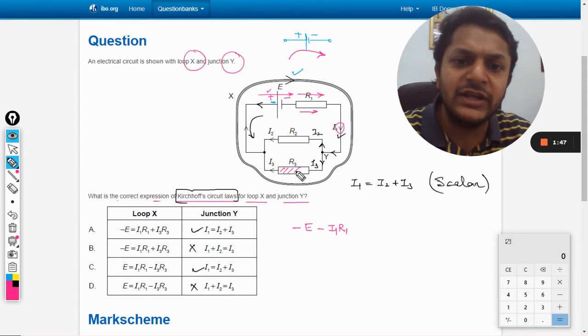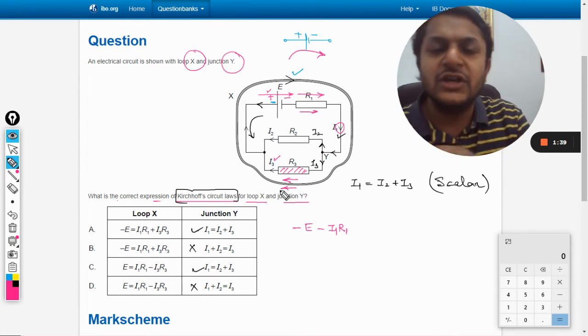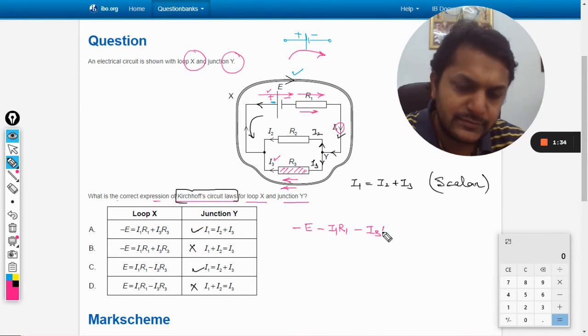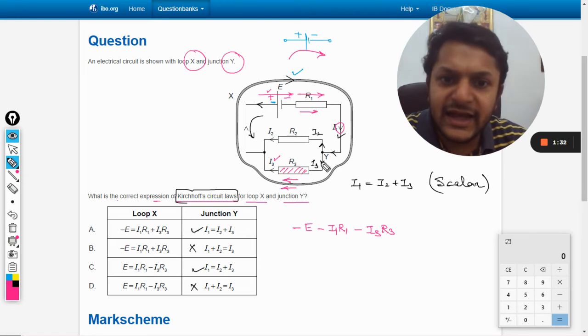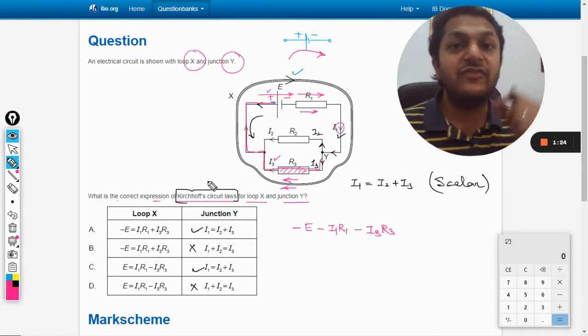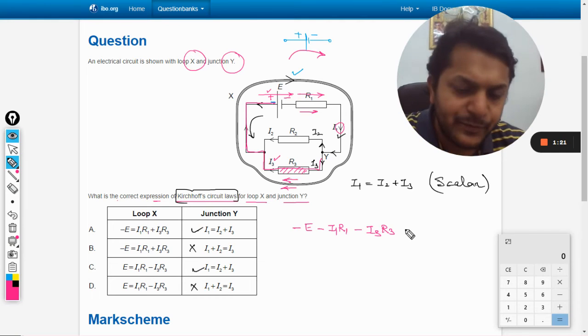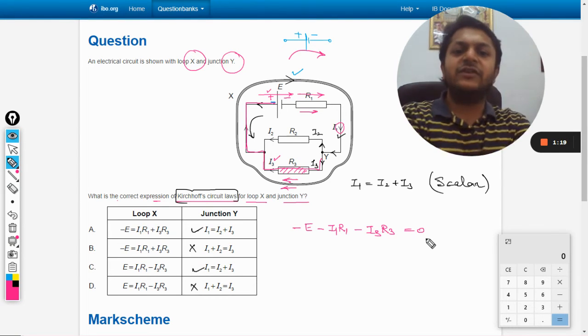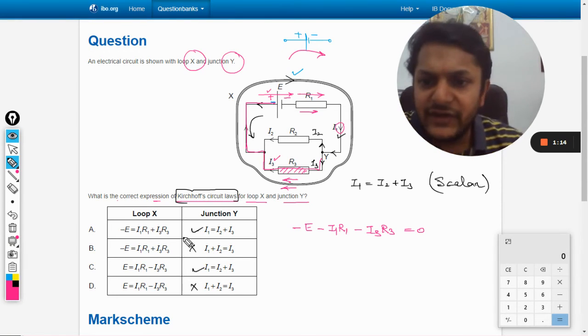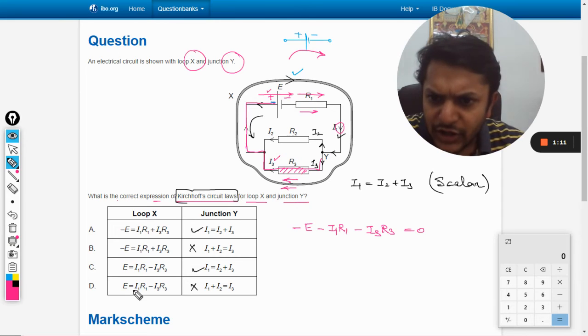And then we have only R3. The current is moving in this direction which is i3, and the loop is also moving in the same direction, so again it will be a subtraction, minus i3·R3. And then the loop goes like this and we go back to the same position. We have reached the same point, so it will be equated with zero. So this is our equation, the Kirchhoff's loop law equation.